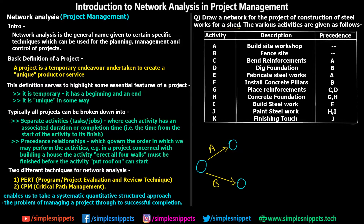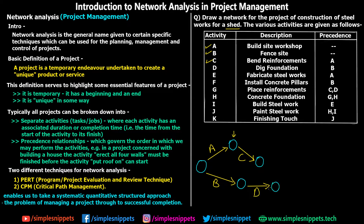Moving on: activity C can only occur after A, so from the node reached after A, we draw an arrow labeled C to a new node. Activity D is dig foundation and happens after B, so from the node reached after B, we draw an arrow labeled D to another node. If you are drawing along, use a pencil because a correction is coming.